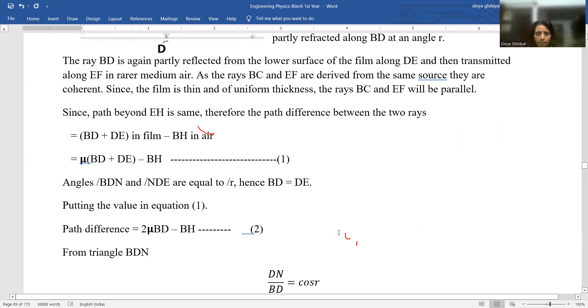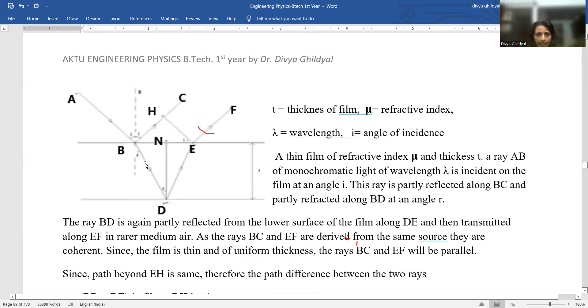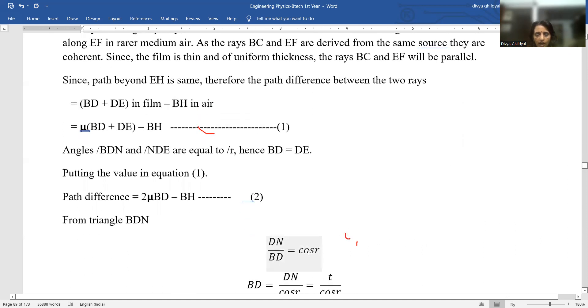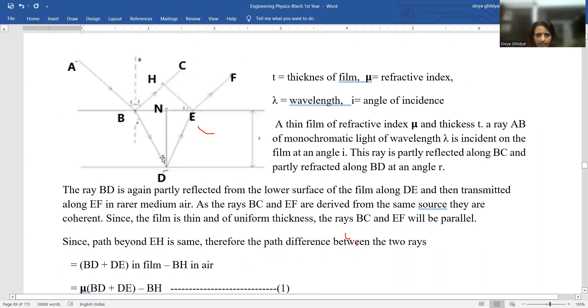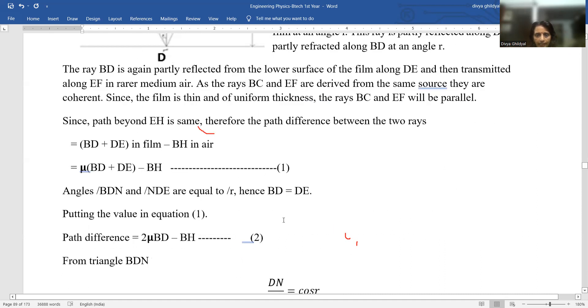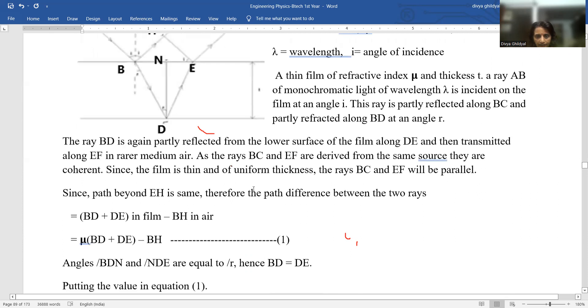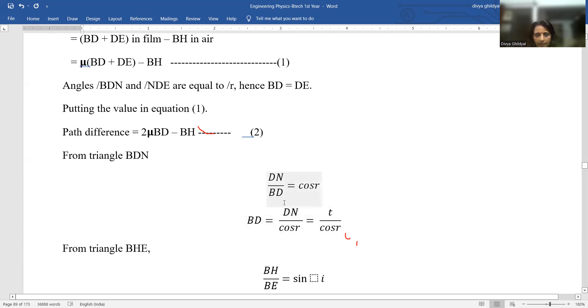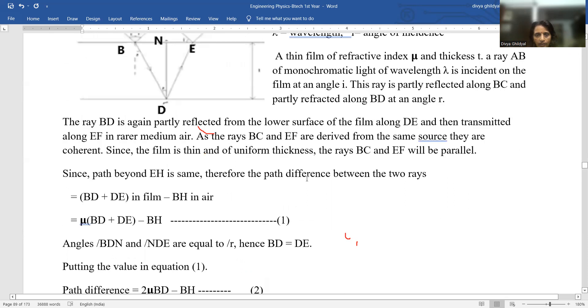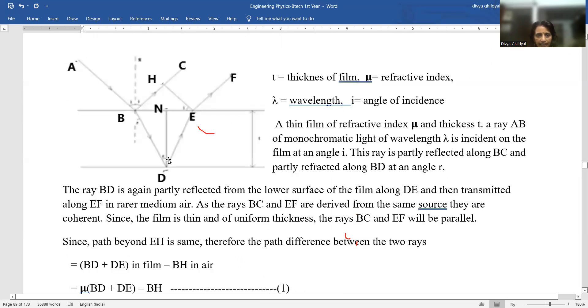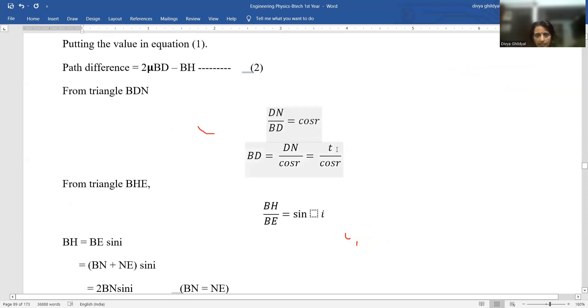From triangle BDN, we get cos R is equal to ND upon BD. Cos is base upon hypotenuse. So this becomes ND upon BD. And then BD is equal to DN upon cos R. And what is DN? DN here is the thickness of my thin film. So it becomes DN is equal to T upon cos R.